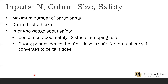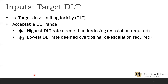Conversely, if there is strong evidence that the first dose is safe, we can stop the trial early if we converge to a dose quickly. Finally, we need to know the target dose-limiting toxicity rate, C, often set at 0.3. We also need to know the acceptable DLT range — what is the highest DLT rate considered underdosing, i.e., when do we need to escalate, and what DLT rate would be deemed overdosing, when do we need to de-escalate?